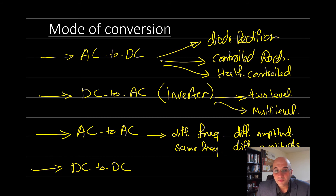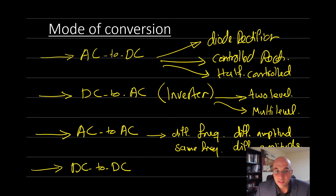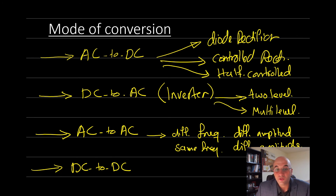Sometimes the system requires multi-stage conversion, where we convert power from one stage to another — for example, AC to DC and then DC to AC, giving two stages. It can also be DC to AC and then AC to DC within one converter, similar to what we have in solid state transformers or DC transformers.